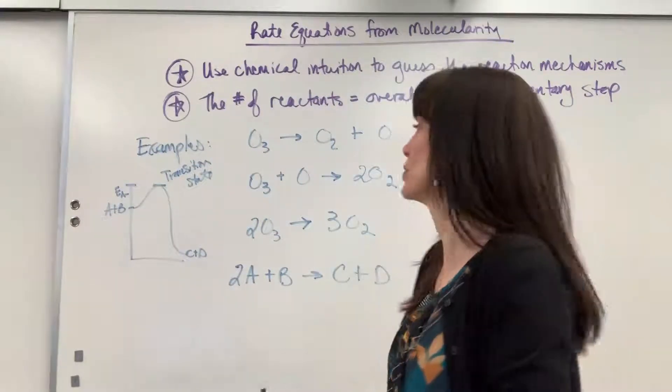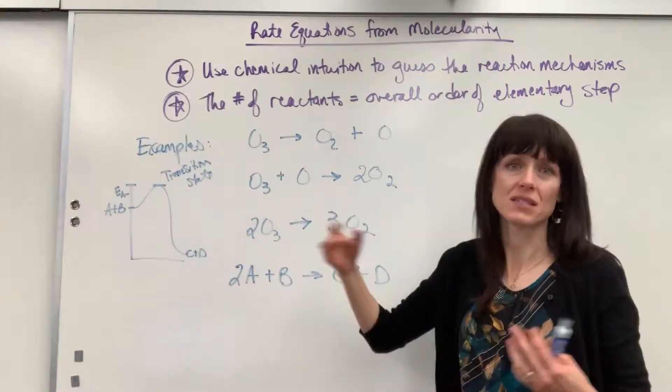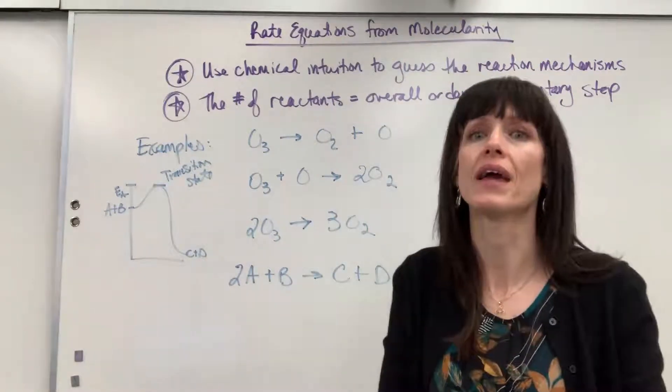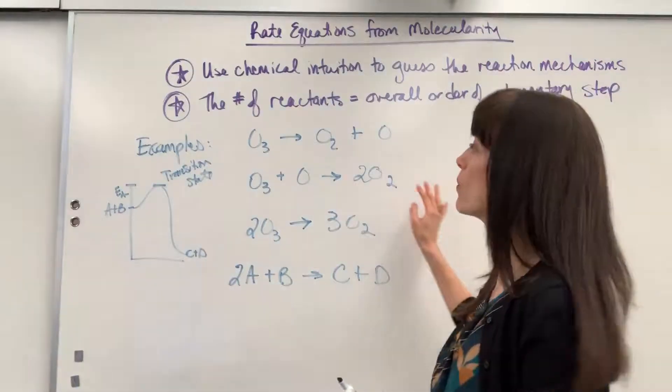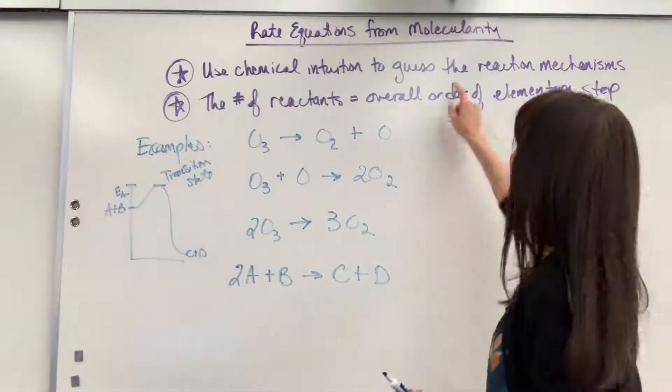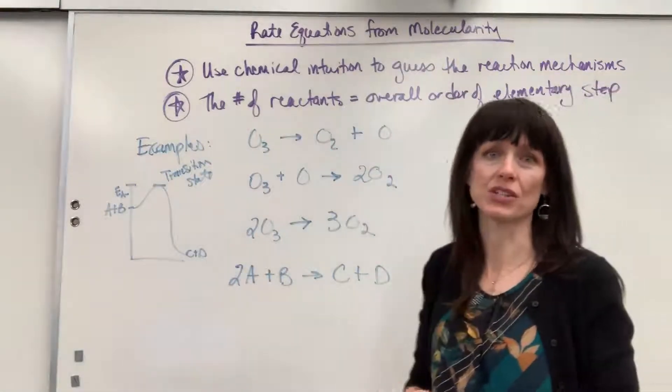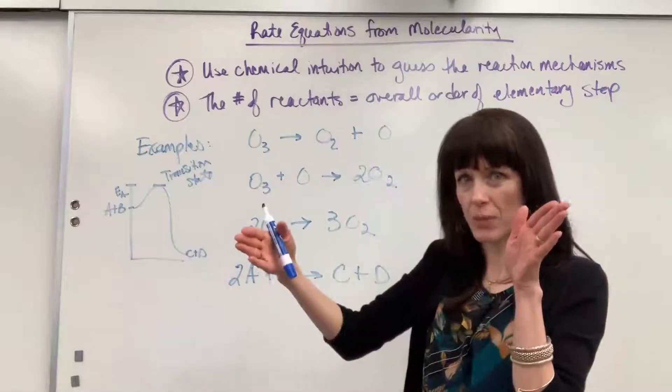We're going to pretend that whatever the number of reactants is, that that's the order of the reaction. So what I show you here, you cannot apply to a situation when you're given data. Okay, this is only when you have molecularity. When you have molecularity, then we can assume that the order of the reaction equals the number of reactants. So keep those separate in your brain.